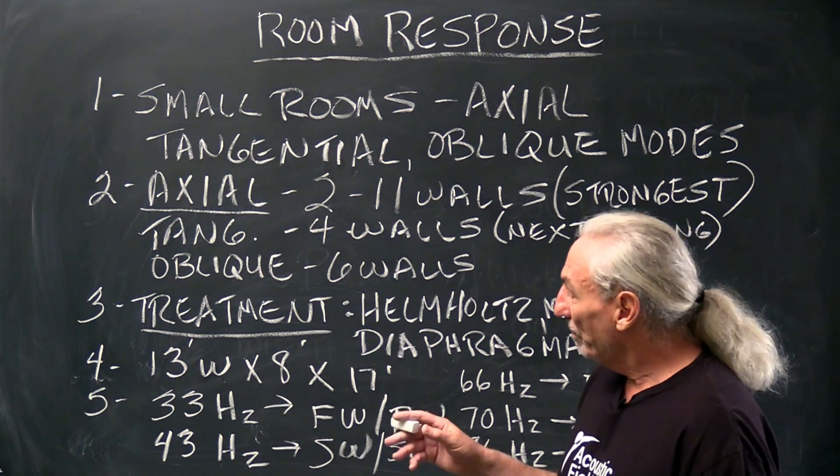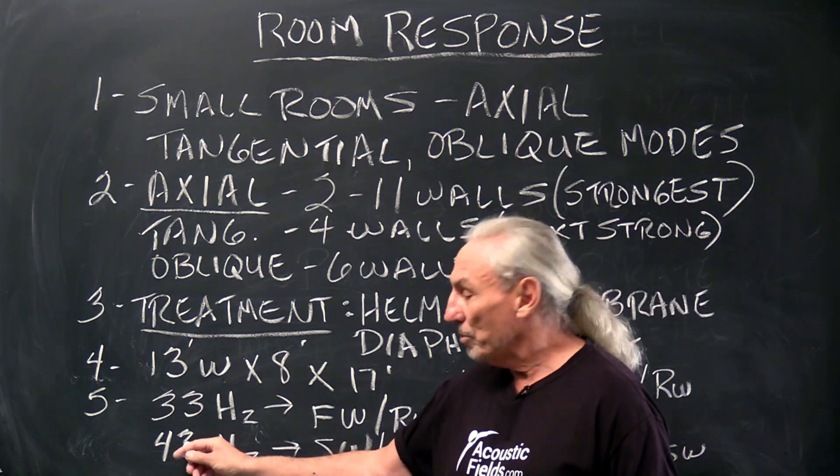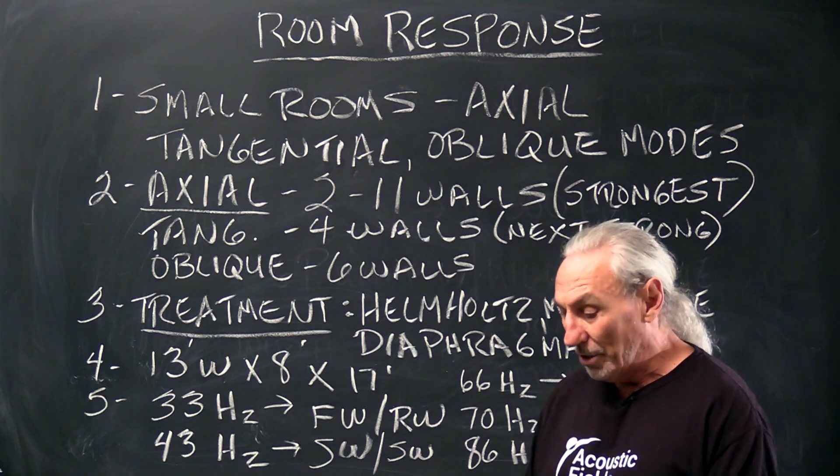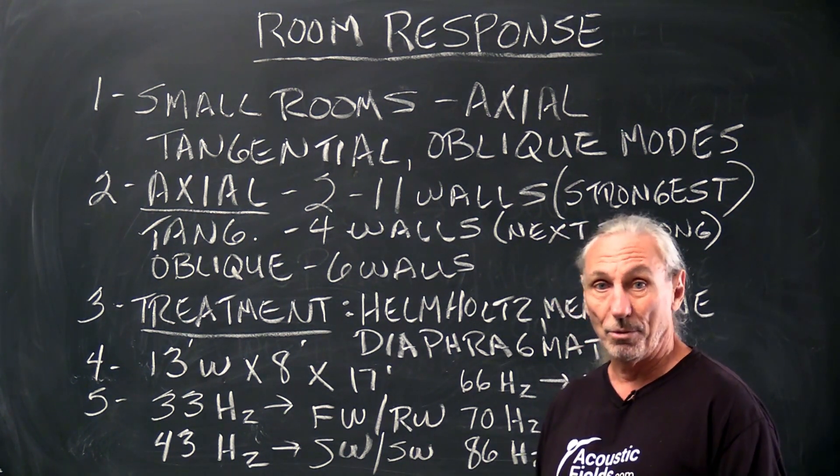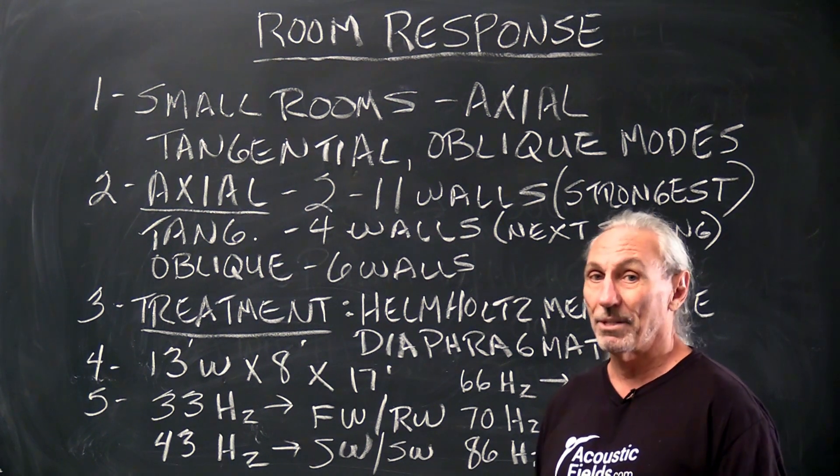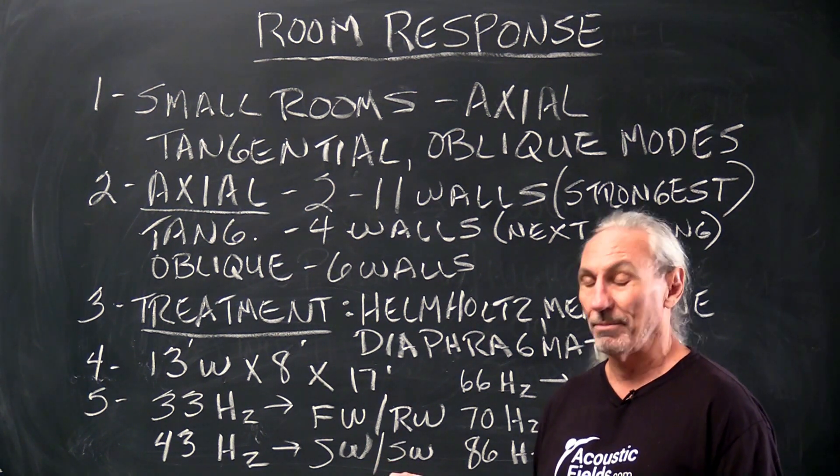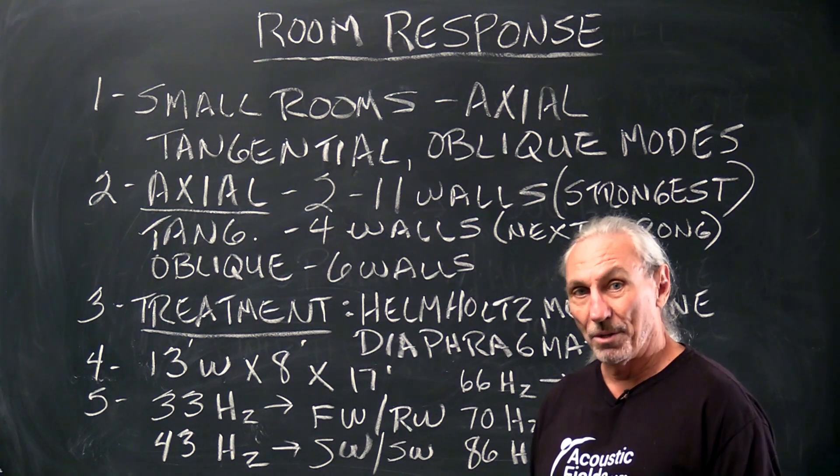So if you analyzed your room and you knew that you had a 43 cycle problem, you could design a Helmholtz resonator to deal with just 43 cycles. It would take some doing but I could help you do it. I've done it many, many times. That's the good thing.